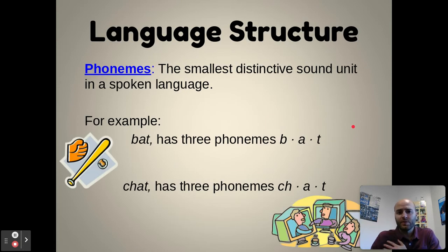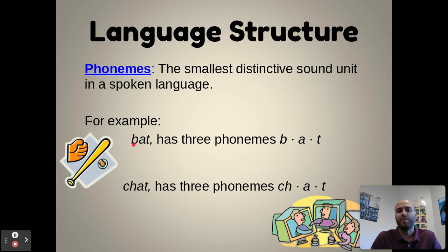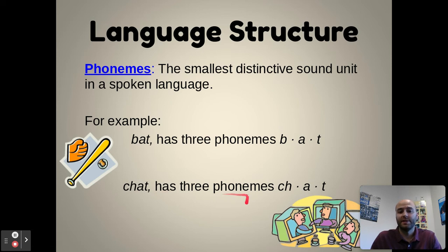At its most basic level, language's units are called phonemes — the smallest distinctive sound unit in a spoken language. For example, the word bat has three phonemes: B, A, T. They're not syllables, just the smallest distinctive sound unit. Chat also has three phonemes even though it has four letters, because you say ch-at. That ch forms its own phoneme, its own small distinctive sound unit.